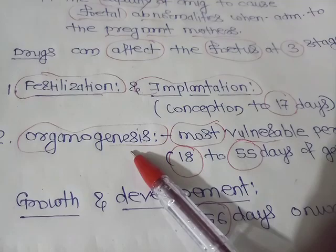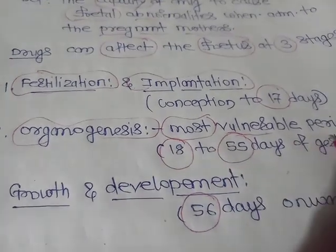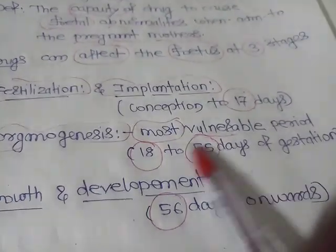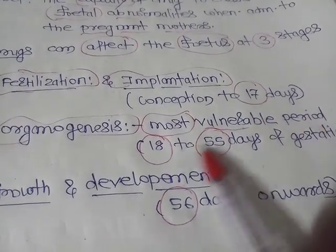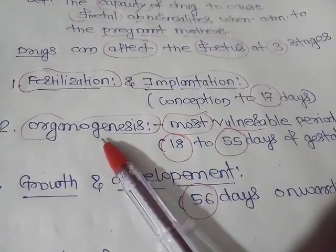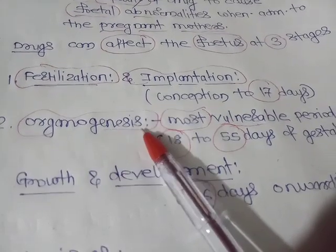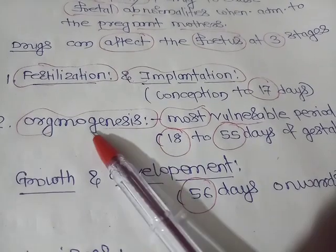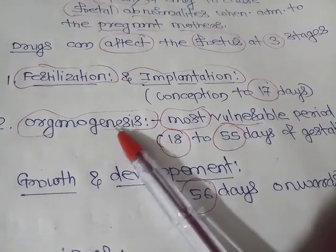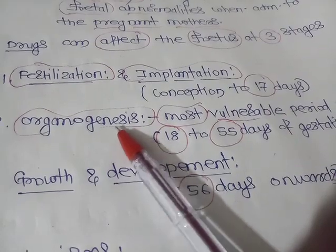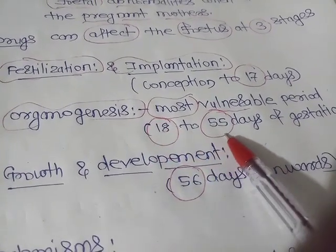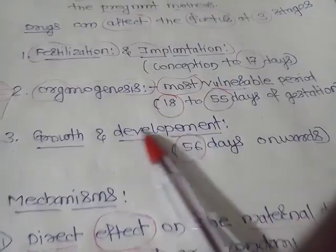The next and most vulnerable period is organogenesis, from the 18th to the 55th day of gestation. All organs are synthesized or generated during this phase, which is why it is called organogenesis. Various congenital malformations can occur due to drugs during this most vulnerable period.